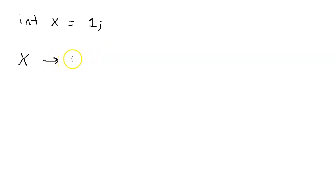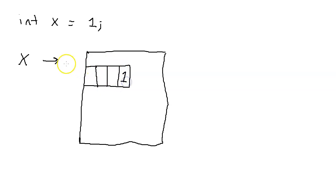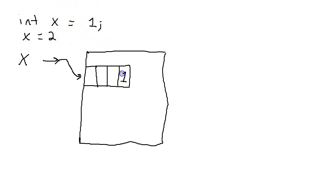That location in memory has the value of x. Let's think of this as a giant piece of memory. In our giant piece of memory we have an integer — integers are four bytes long — so let's say we take four bytes right here, and the value one gets assigned there. Now if we were to change it with another statement that says x equals two, then what we do is we change this value from one to two.